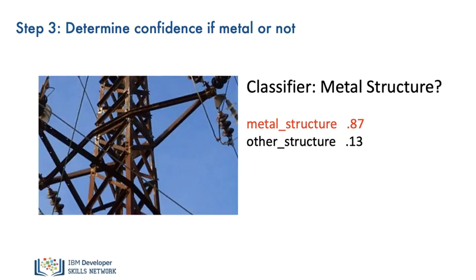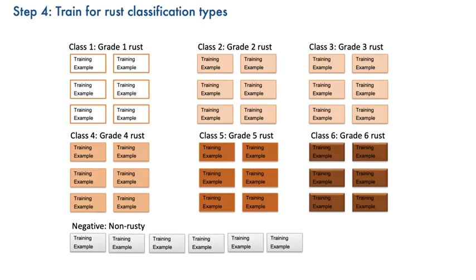With this custom metal classifier, you could then determine which areas of the image contain metal. But that wouldn't be enough — you could then create another custom classifier to determine the level of rust based on certain structural guidelines or criteria. For example, you could have grade 1 rust, which could be very minimal rust, up to grade 6 rust, which would be more severe.